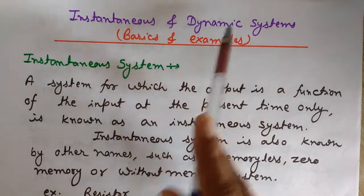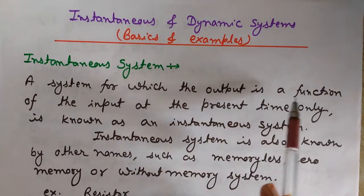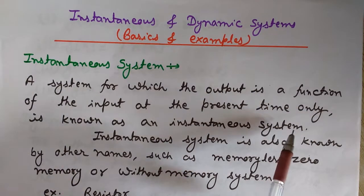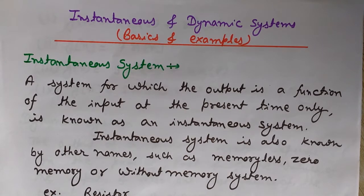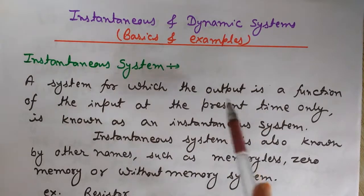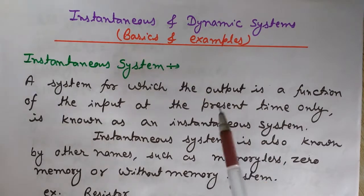First of all, let's start with the instantaneous system. A system for which the output is a function of the input at the present time only is known as an instantaneous system. As we know, instantaneous means at this instant, at a moment. So in instantaneous systems, the output is a function of the input at the present time only. We will see how this happens with the help of examples.